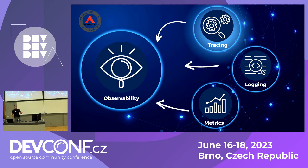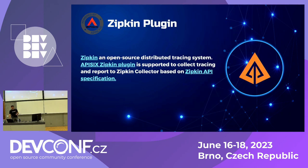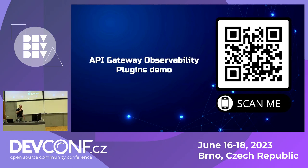The last observability pillar is tracing. Tools like Jaeger and OpenTelemetry are popular for this. My colleague Nikola is giving a talk on Sunday about using OpenTelemetry from a developer perspective. APISIX also has a Zipkin plugin to collect traces and report to Jaeger or other platforms. For today, I'll focus on metrics and logging, then show you a demo.